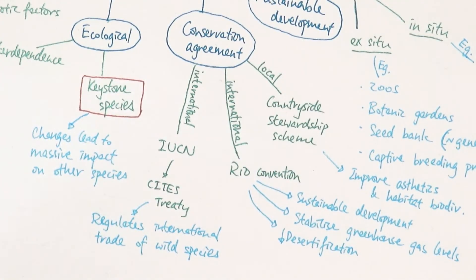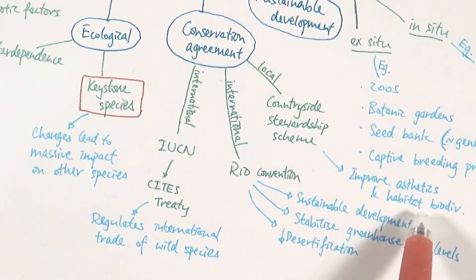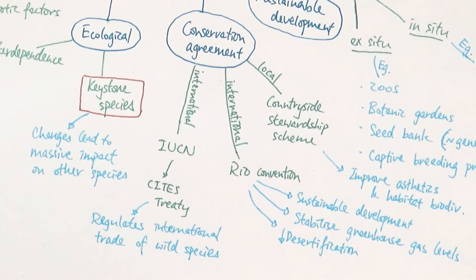The third is a local conservation agreement: the Countryside Stewardship Scheme, specific to the UK. Its main goals are to improve the aesthetics of the countryside so people can enjoy it, and to protect habitat biodiversity. When people learn to appreciate the countryside, they also learn to protect it — maintaining habitat, species, and genetic biodiversity in those areas.